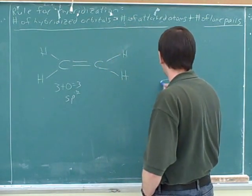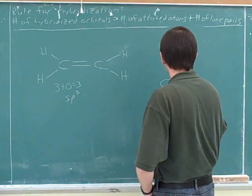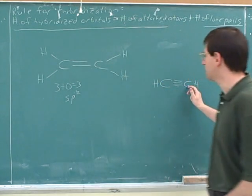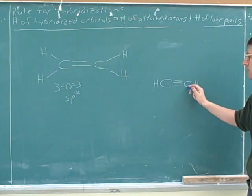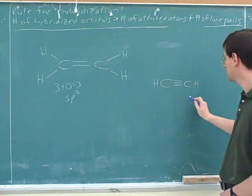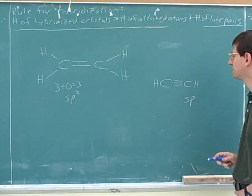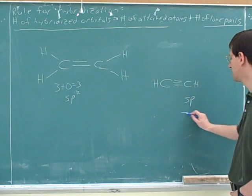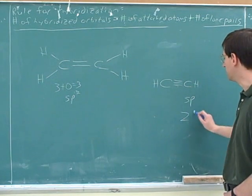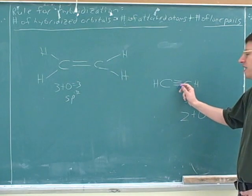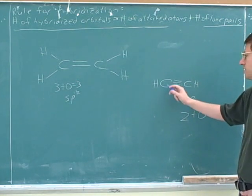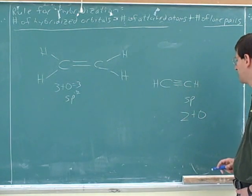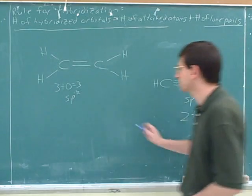What's the hybridization here? SP. And that's because there are two attached atoms and no lone pairs — the carbon and the hydrogen. We don't count the bonds, we count the two attached atoms. So we're only hybridizing two orbitals: the s and the p.